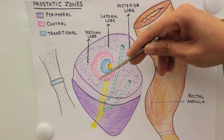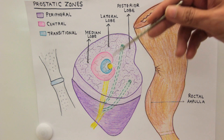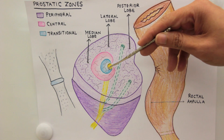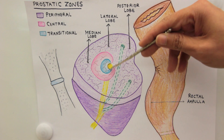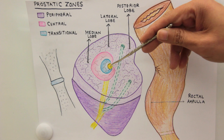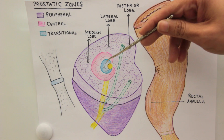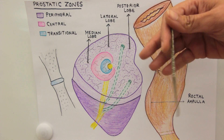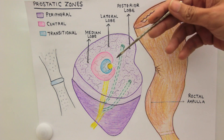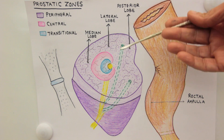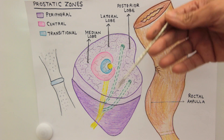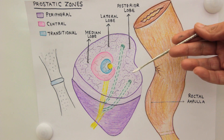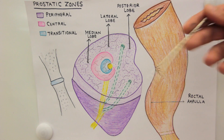In an advanced stage of BPH — or even once there is significant hyperplasia — it is going to compress the prostatic urethra. The patient will present with complaints related to urethral compression: increased frequency of urination, nocturia (urge to urinate during the night), and dysuria (painful urination). These would be the complaints the patient presents with in the clinic.